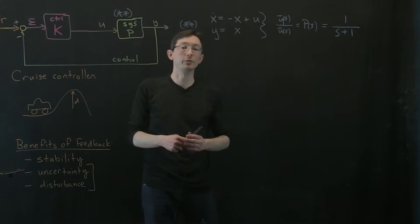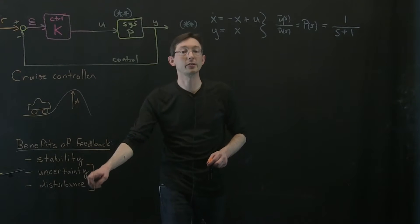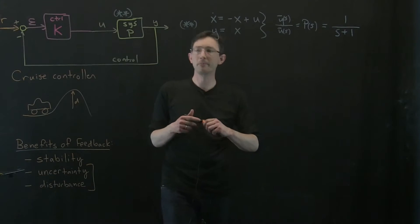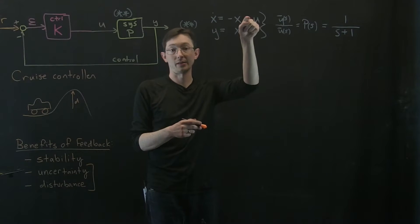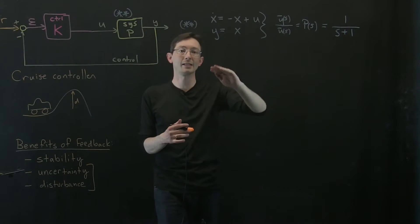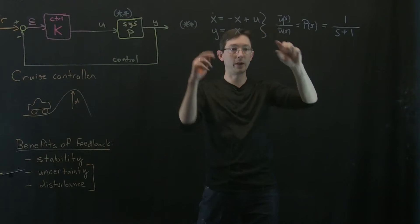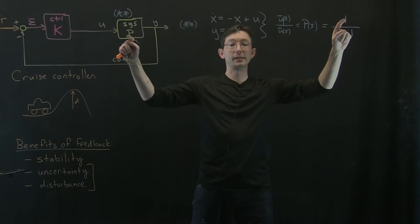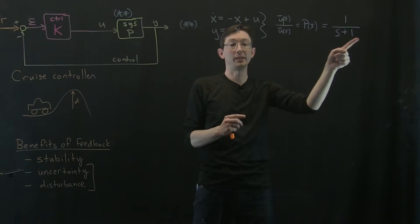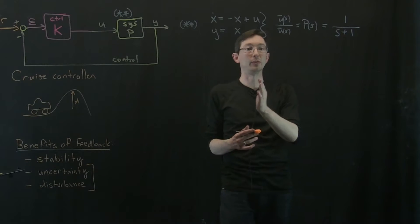So we're going to go back to our trusty cruise control example, which is designed to look at uncertainty and disturbance rejection. And we're going to look at our augmented car model which essentially has a little bit of dynamics - it takes some time from when you hit the gas to when the car speeds up. And if you take that differential equation and find the transfer function, the transfer function for our system is 1 over s plus 1, so it's got a pole at s equals minus 1, a stable pole in the left half plane.